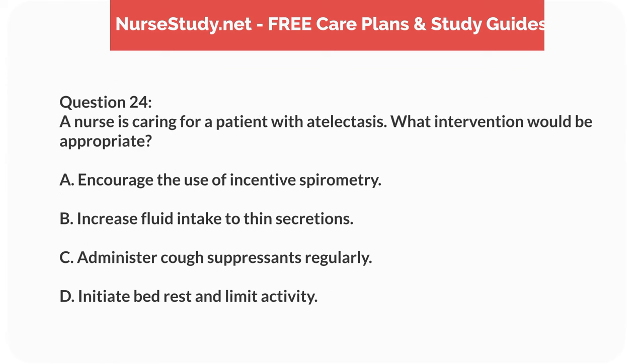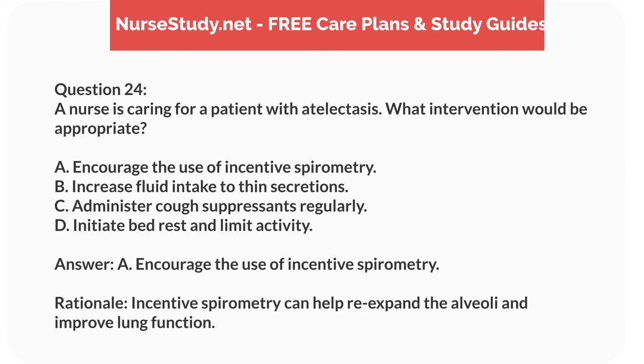Question 24. A nurse is caring for a patient with atelectasis. What intervention would be appropriate? A. Encourage the use of incentive spirometry. B. Increase fluid intake to thin secretions. C. Administer cough suppressants regularly. D. Initiate bed rest and limit activity. Answer: A. Encourage the use of incentive spirometry. Rationale: Incentive spirometry can help re-expand the alveoli and improve lung function.